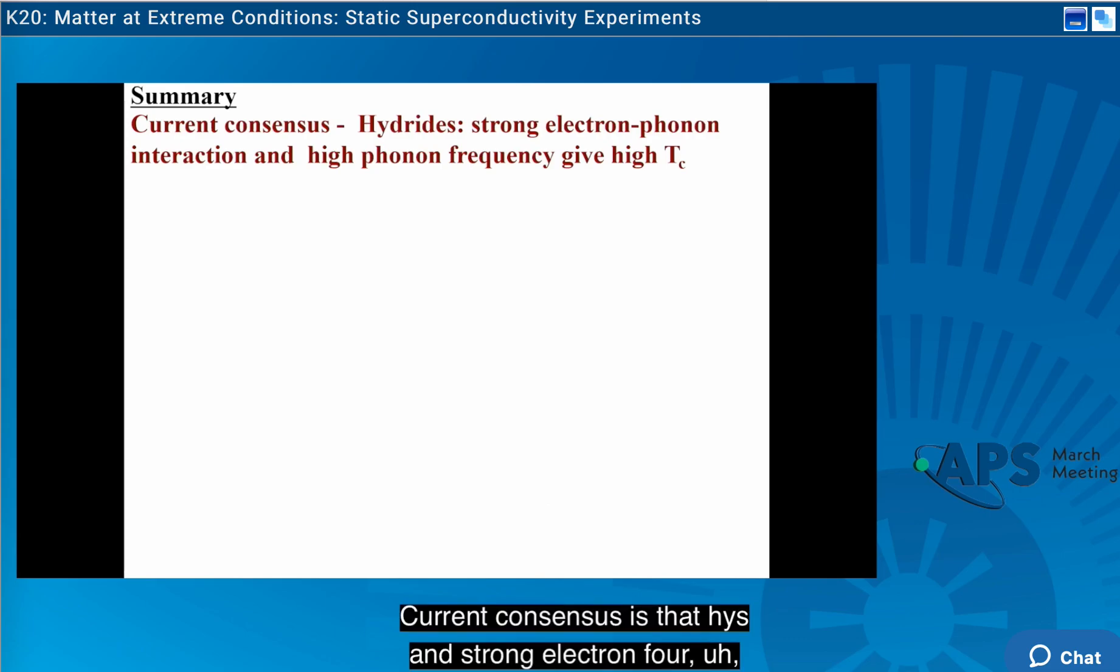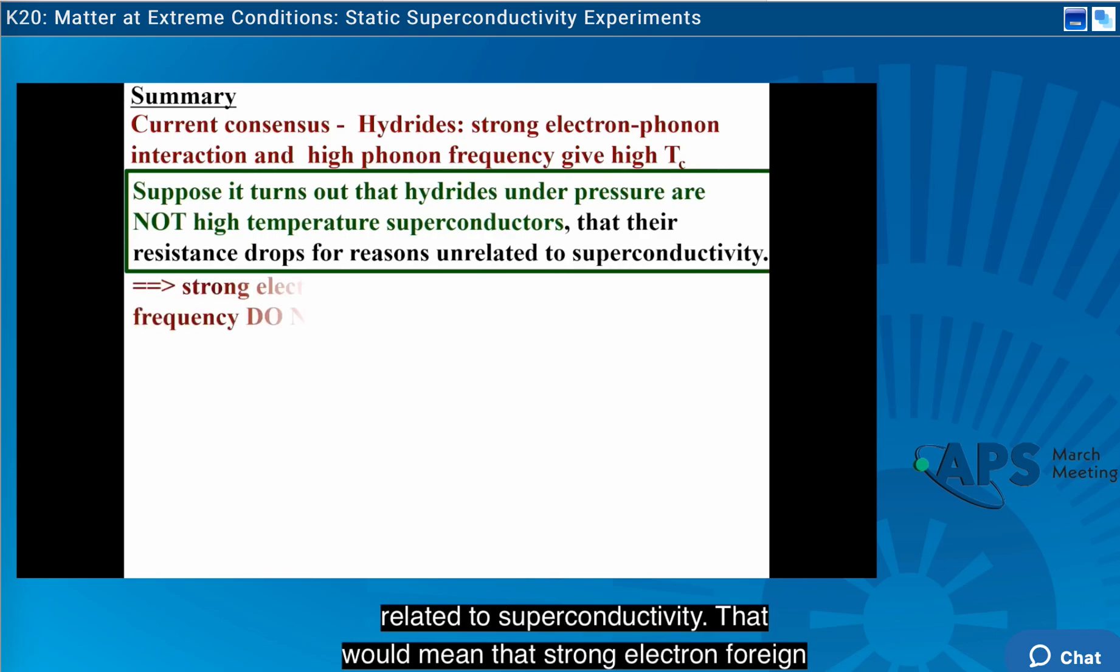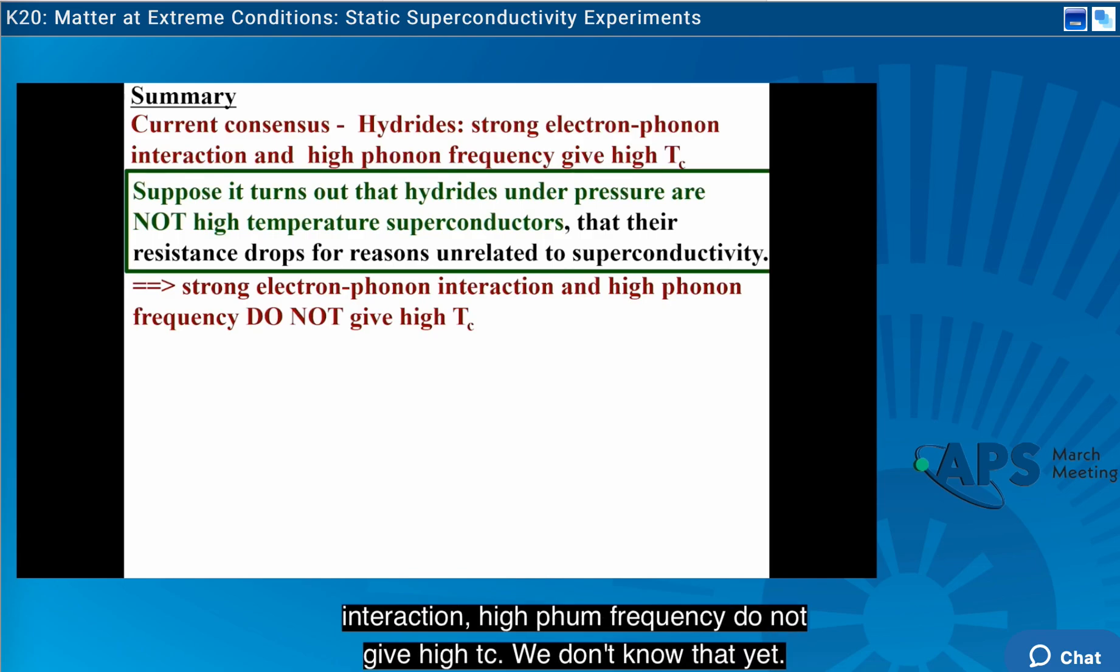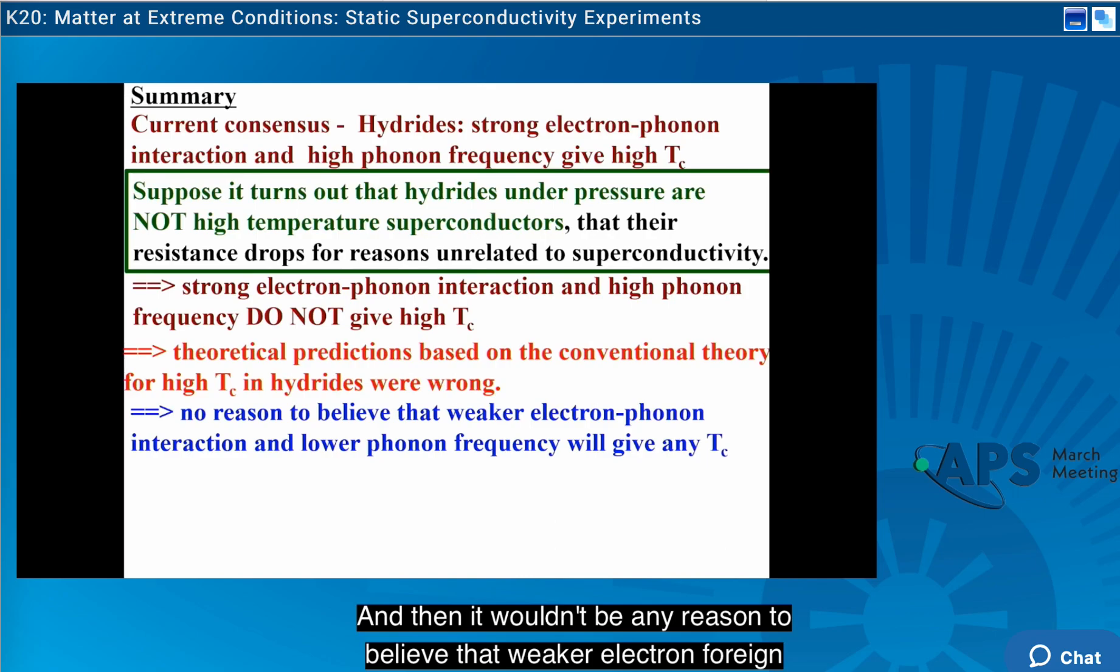Let me summarize. Current consensus is that hydrides with strong electron-phonon interaction and high phonon frequency give high-TC. Let's assume it turns out that all the hydrides that we have been considering are not high-temperature superconductors and that the resistance drops for reasons unrelated to superconductivity. That would mean that strong electron-phonon interaction and high phonon frequency do not give high-TC. We don't know that yet, but let's say that happens. Then that would mean that all the theoretical predictions based on the conventional theory for high-TC in hydrides were wrong.